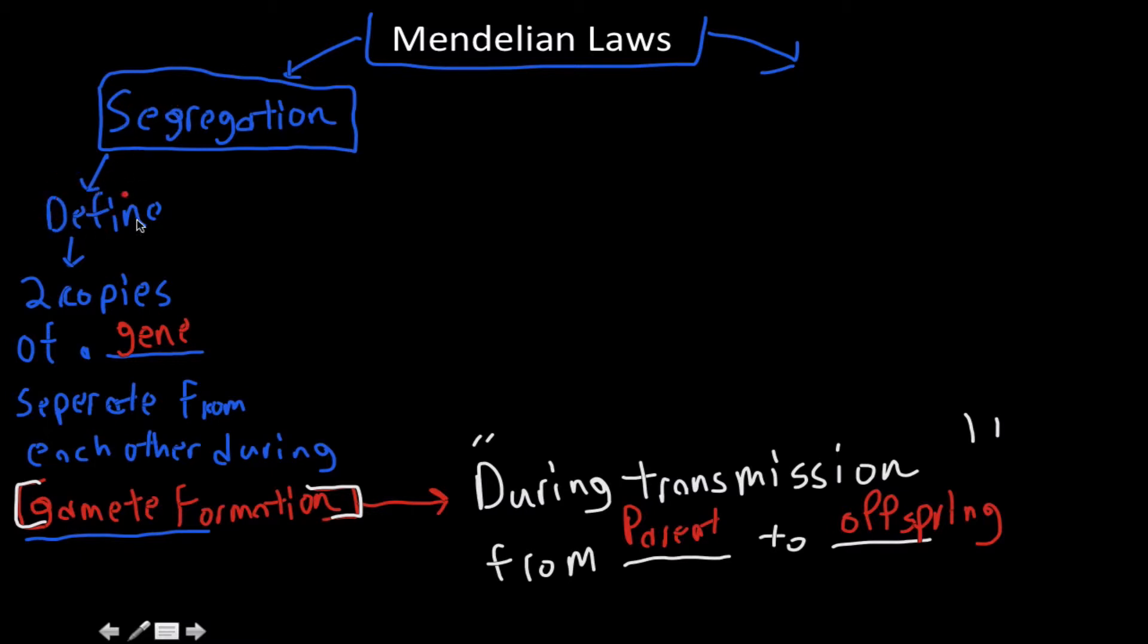Okay, so the law of segregation is where, in definition, is where the two copies of a gene separate from each other during gamete formation. Now, Gregor Mendel didn't know much about DNA. He didn't know much about haploid, diploid cells.